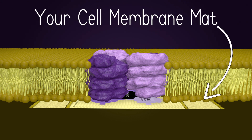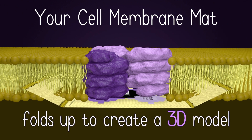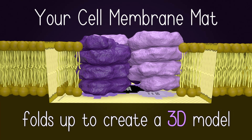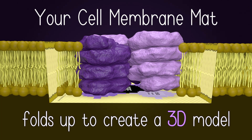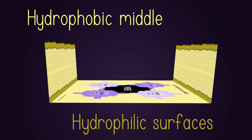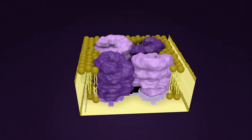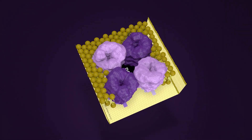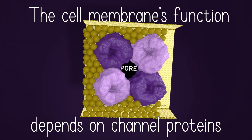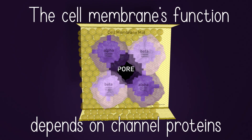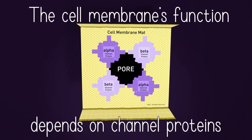Your cell membrane mat folds up to create a 3D model with a hydrophobic middle and hydrophilic surfaces. The cell membrane's function depends on channel proteins.